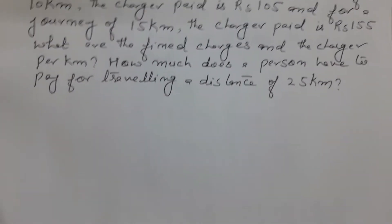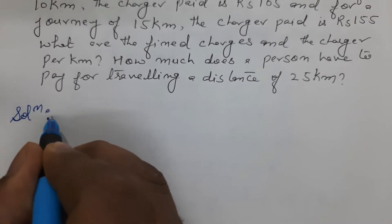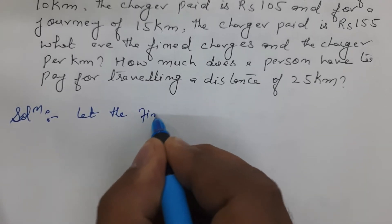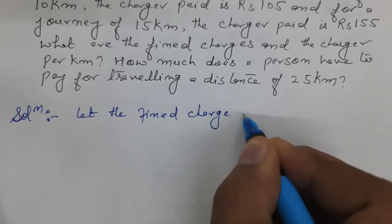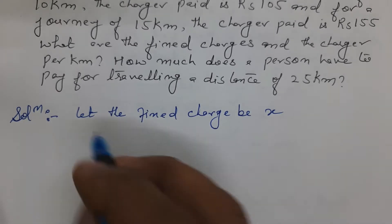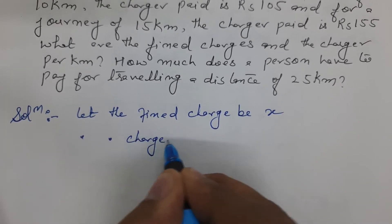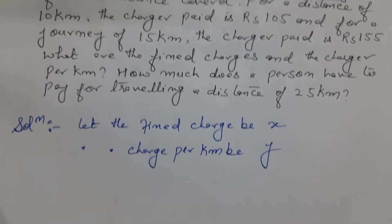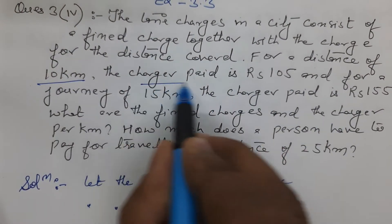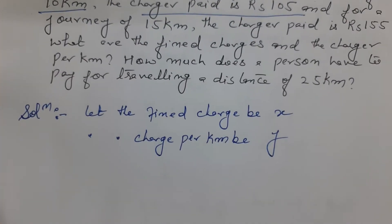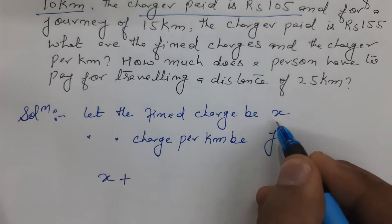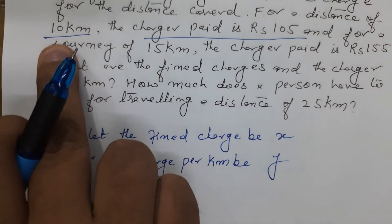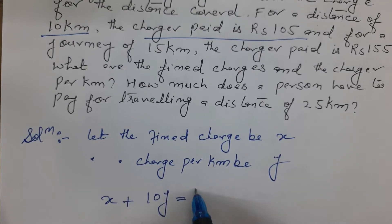Let us set up the solution. Let the fixed charge be x and the charge per km be y. For a distance of 10 km, the charge paid is 105 rupees. So our first equation is: x plus 10y equals 105.